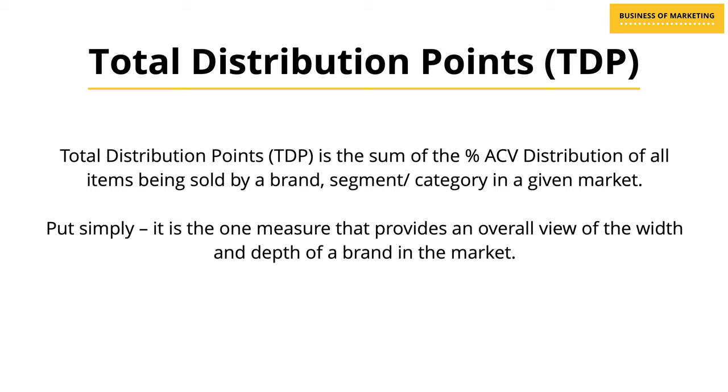Just like the width of distribution is important, the depth of distribution is equally important to get a holistic picture of how well your product or brand is being distributed. The next question would be: is there a single measure that can give you a perspective of both the width and the depth of distribution — one comprehensive measure for understanding distribution overall? Yes, there is, and it is called TDP or Total Distribution Points. TDP is the sum of percentage ACV distribution of all items being sold by a brand, a segment, or a category in a given market. Put simply, it is the one measure that provides an overall view of the width as well as the depth of a brand in the market.